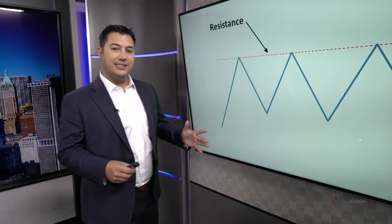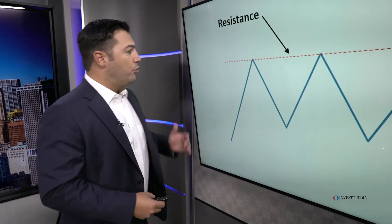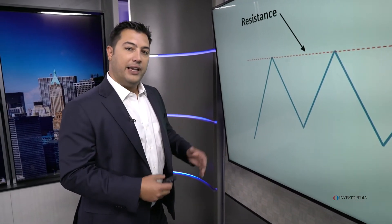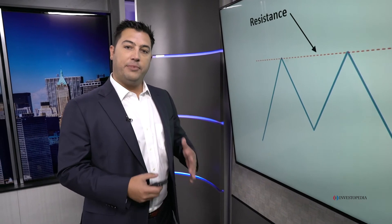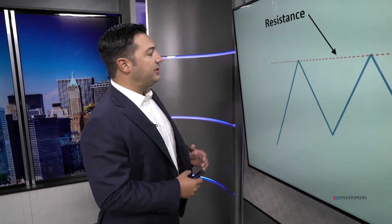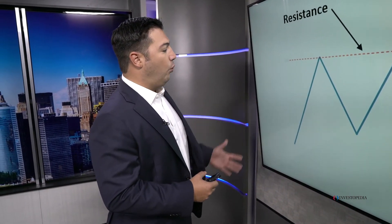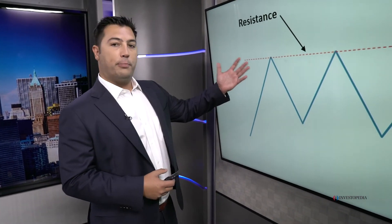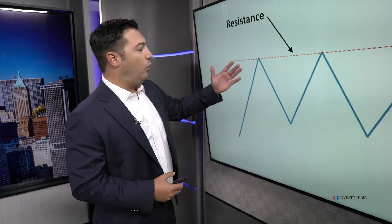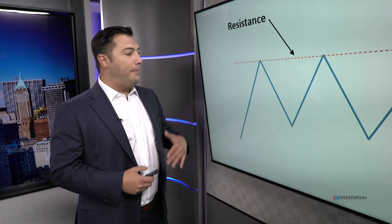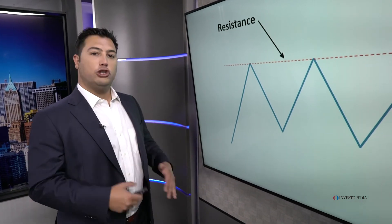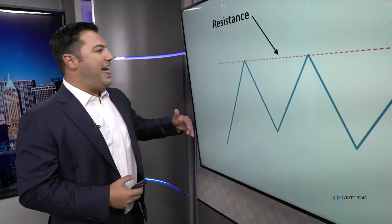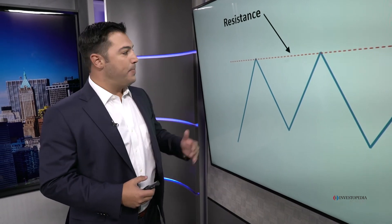Resistance is the exact opposite. Resistance, selling, and overhead supply are all the same things — they're synonyms. Resistance is the level where prices in an uptrend stop appreciating. There comes a level where the amount of buying gets overwhelmed by that overhead supply, and those are the peaks in the market.